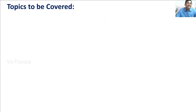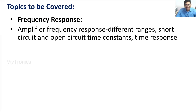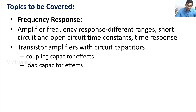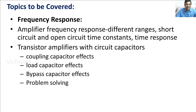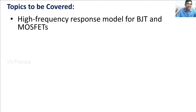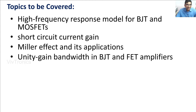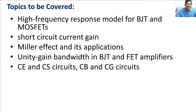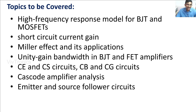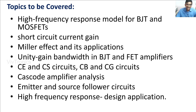The topics covered in unit number two are: amplifier frequency response for different ranges, short circuit and open circuit time constants, time response of transistor amplifiers with circuit capacitors — including the effect of coupling capacitors, load capacitance, and bypass capacitors. We will also discuss the combined effect of coupling and bypass capacitors, high frequency response models of BJTs and MOSFETs, short circuit current gain, Miller effect and its applications, unity gain bandwidth in BJT and FET amplifiers, CE/CS, CB/CG amplifiers, cascode amplifier analysis, and emitter and source follower high frequency response design applications.